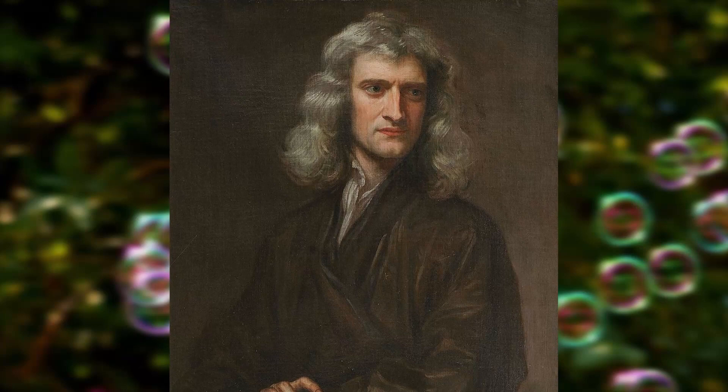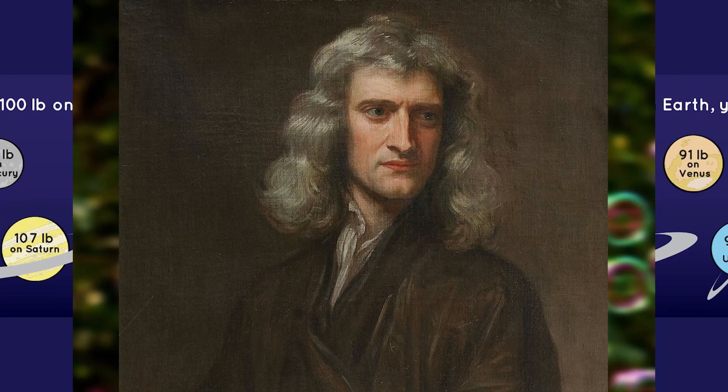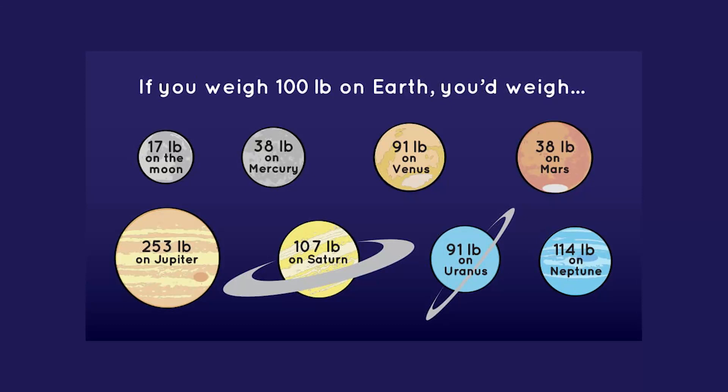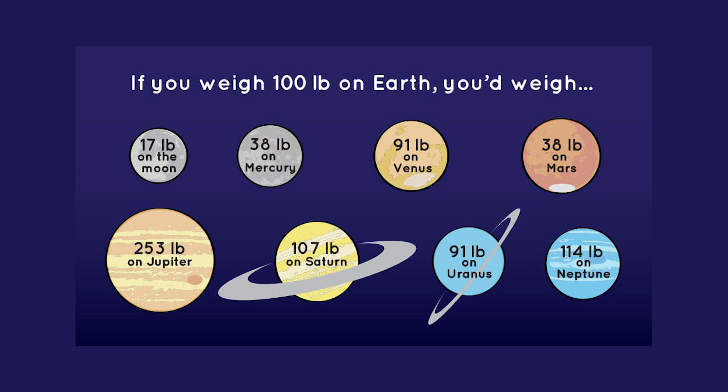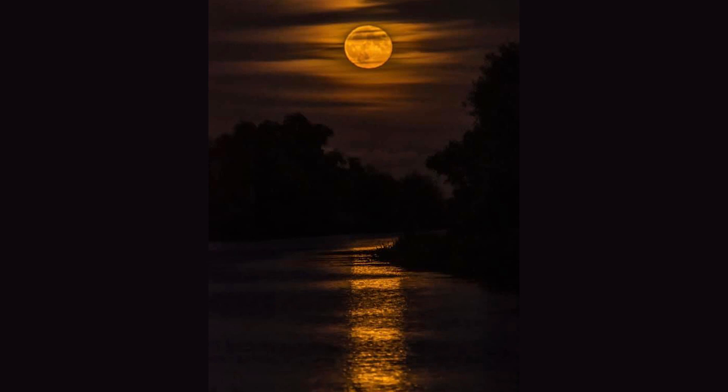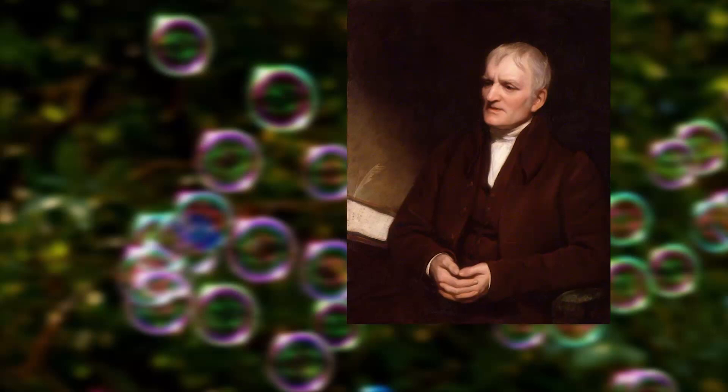It was Sir Isaac Newton who first established there was an attractive force between objects. He called it gravity and indicated that it was dependent on the mass of each object. An object of lesser mass is drawn towards an object of greater mass, which is why we would weigh less on different planets, but also why the moon has an effect on water.